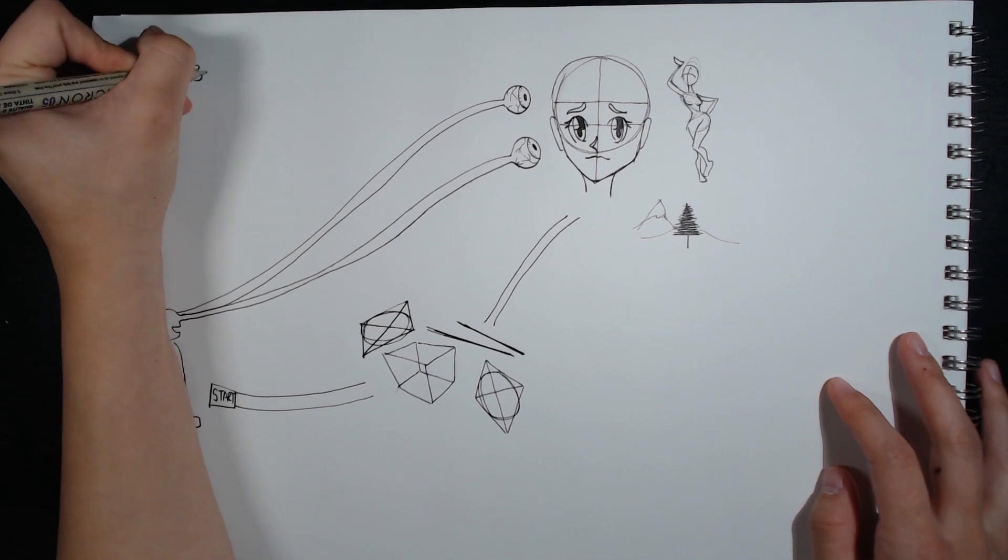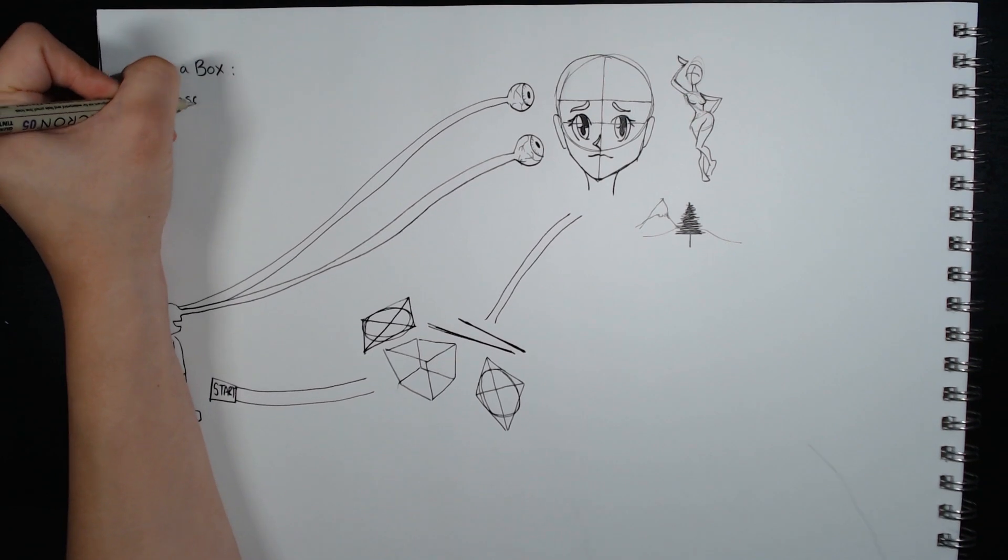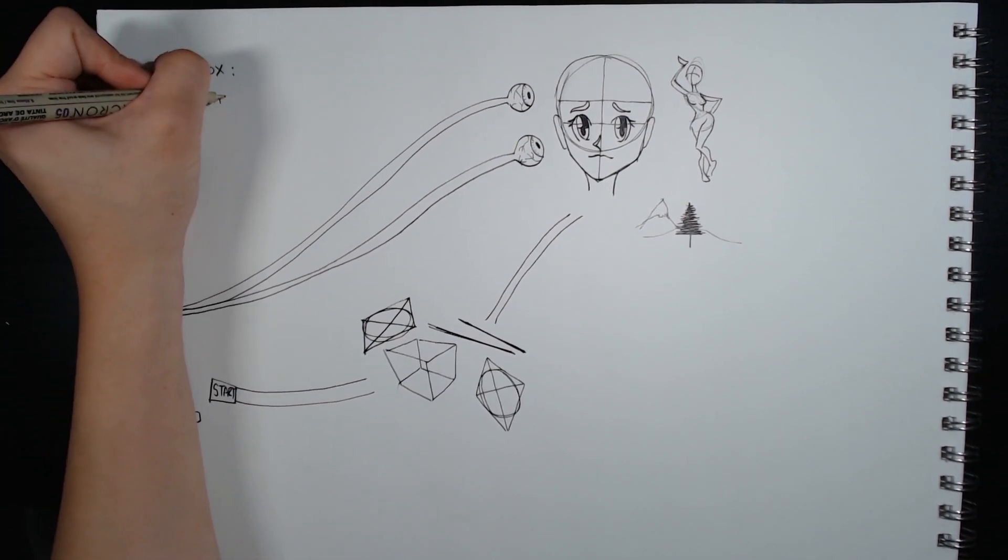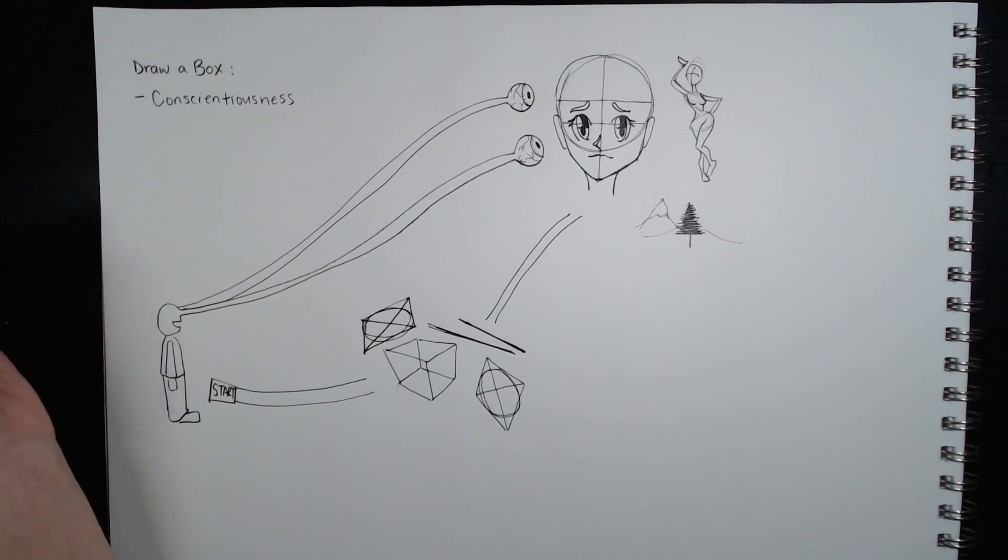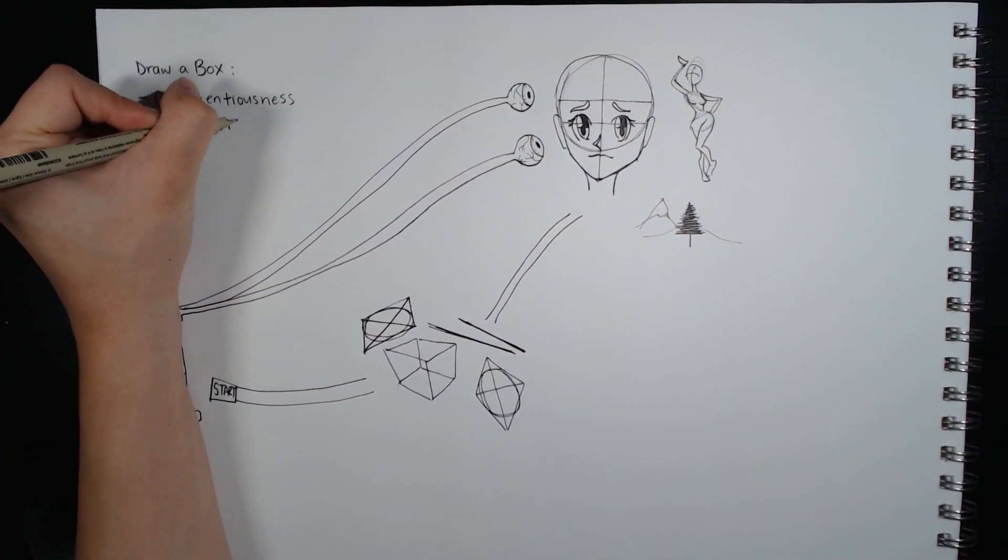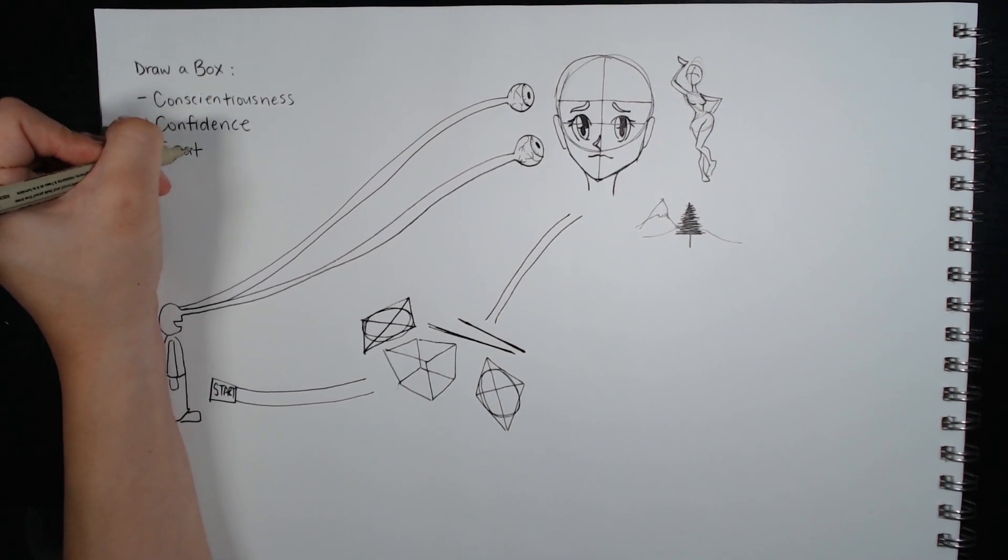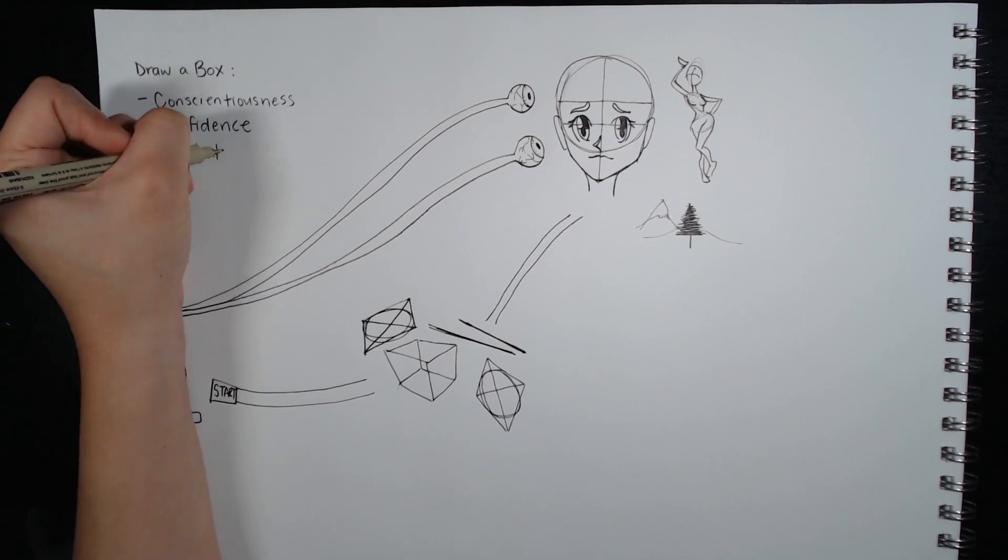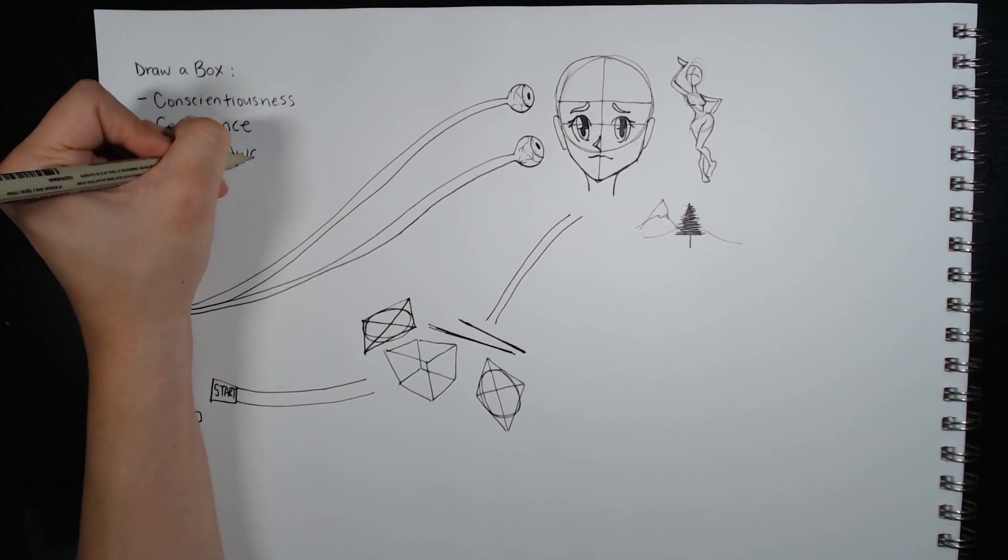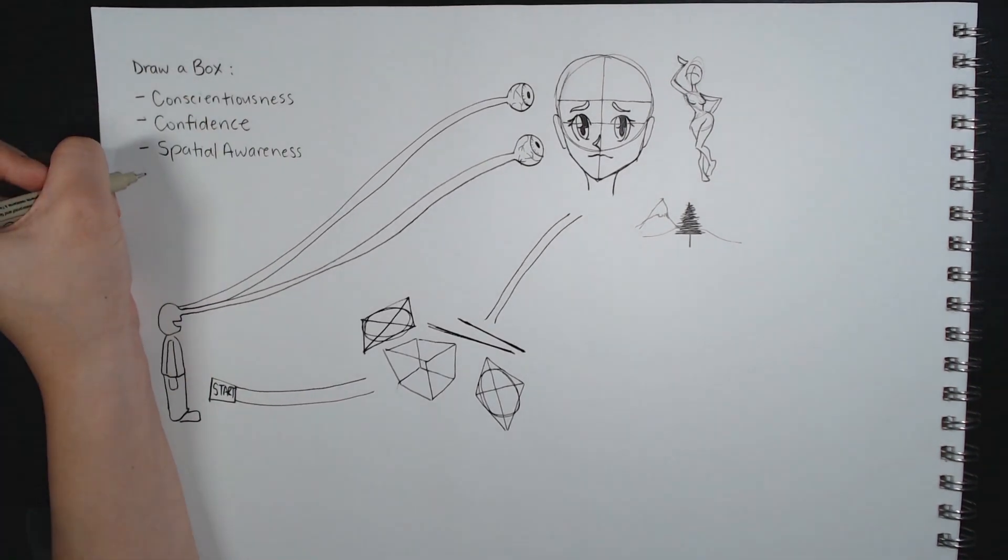At its core, what Drawabox is meant to teach can be summarized in a few points. Conscientiousness: the patience to plan, prepare, and think through each mark you put down. Confidence: the willingness to push forwards without hesitation once your preparations are complete. Spatial awareness: not just an understanding of the forms you're drawing as they exist in 3D space, but an actual belief in the illusion that you're crafting. That you're not simply drawing lines on a flat page, but rather creating actual solid masses in a three-dimensional world.